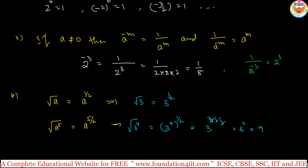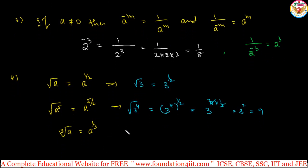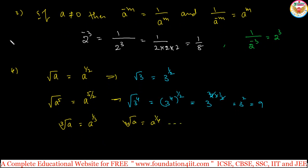Same way, we have the cube root. Cube root of a is a to the power 1 by 3. Then fourth root of a is a power 1 by 4. Finally, we can conclude that nth root of a is a to the power 1 by n. This we can generalize.